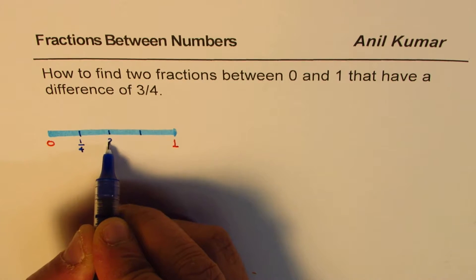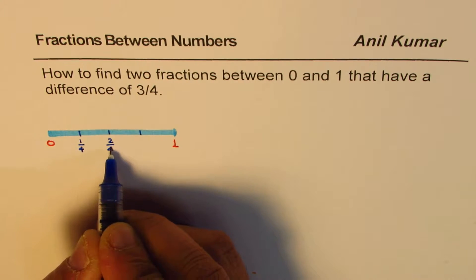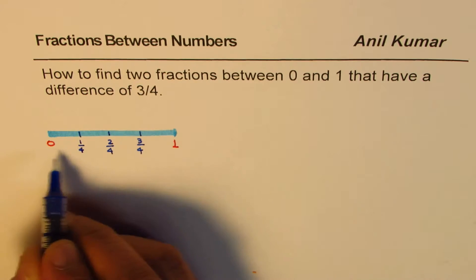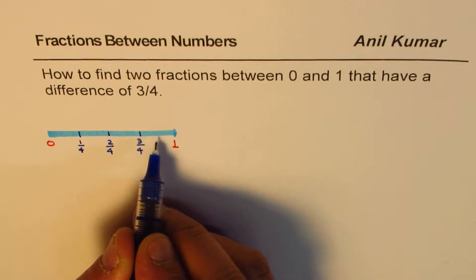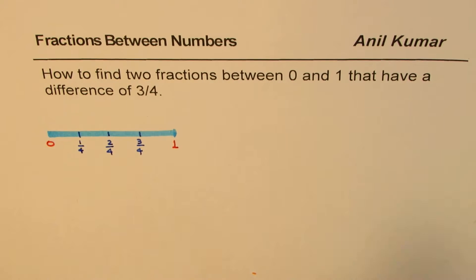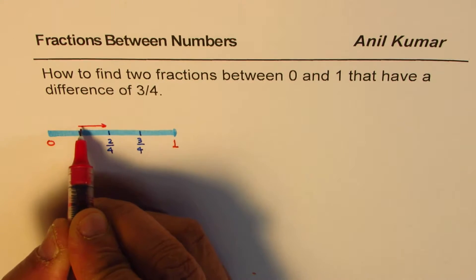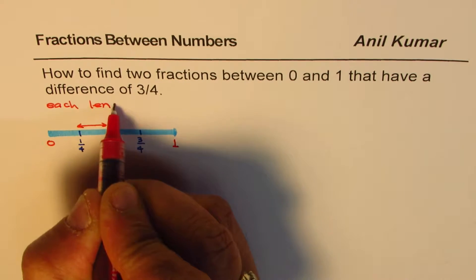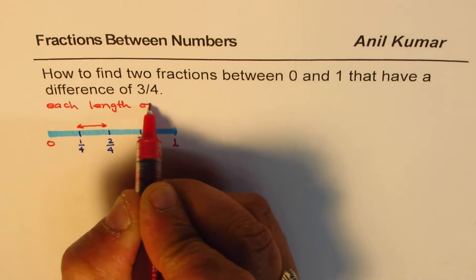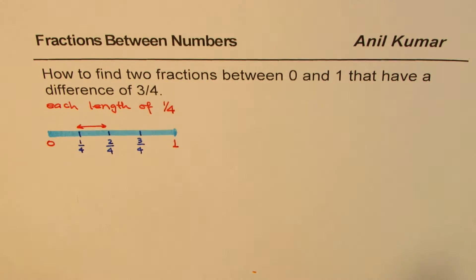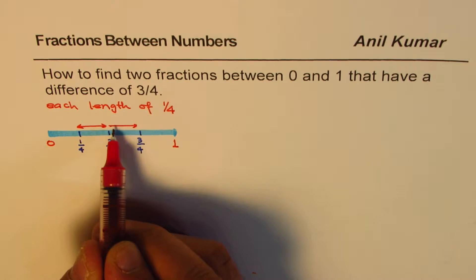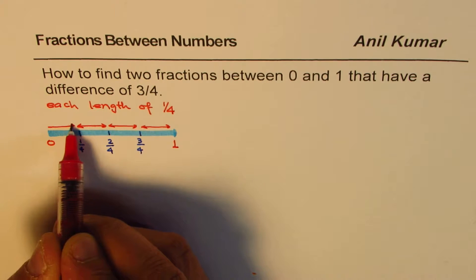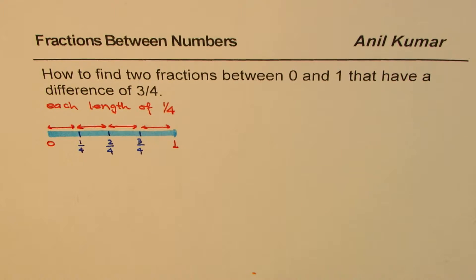This is 2 fourths, or you can say half. This is 3 fourths. So from 0 to 1 we have 4 equal parts. Each is 1 fourth. So each length is 1 fourth — from 0 to 1 fourth, then 2 fourths, then 3 fourths, and finally 4 fourths which is 1. Each length is 1 fourth.